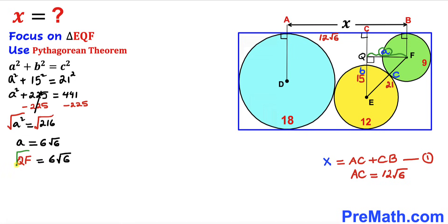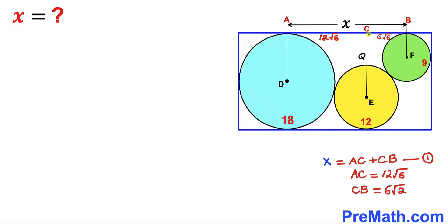So our QF value turns out to be 6√6. Focusing on rectangle QFBC, opposite sides are congruent, so if QF is 6√6, this side length must also be 6√6. Thus our length CB turns out to be 6√6.